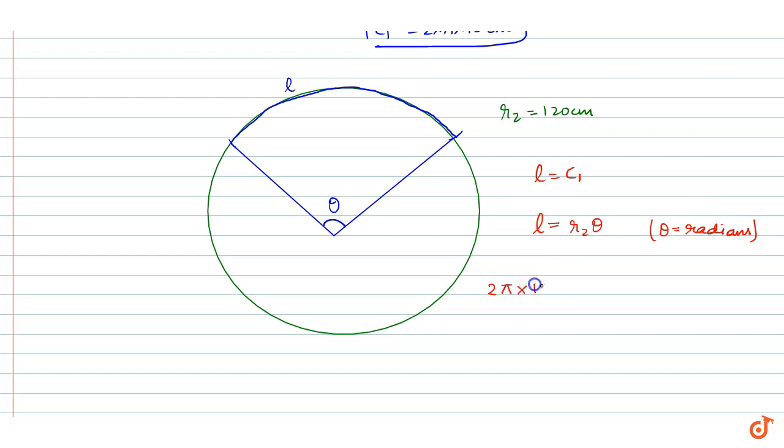So we have 2π times r₁ equal to r₂θ. That is 2 times π times 15 cm divided by 120 cm equals theta. This cancels out 60 times, leaving 4 times.